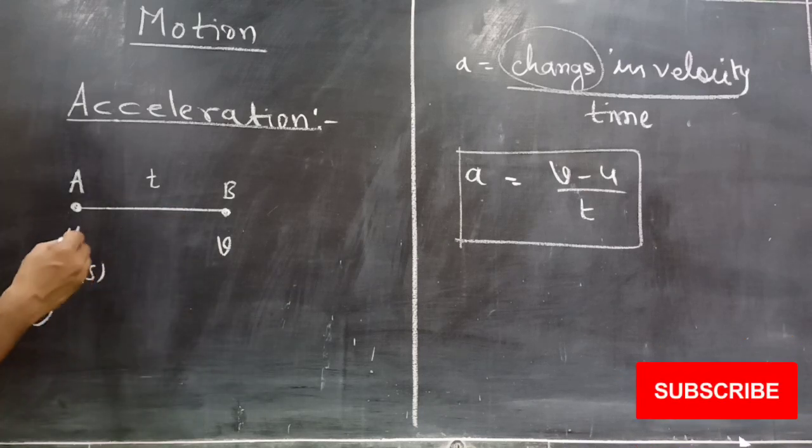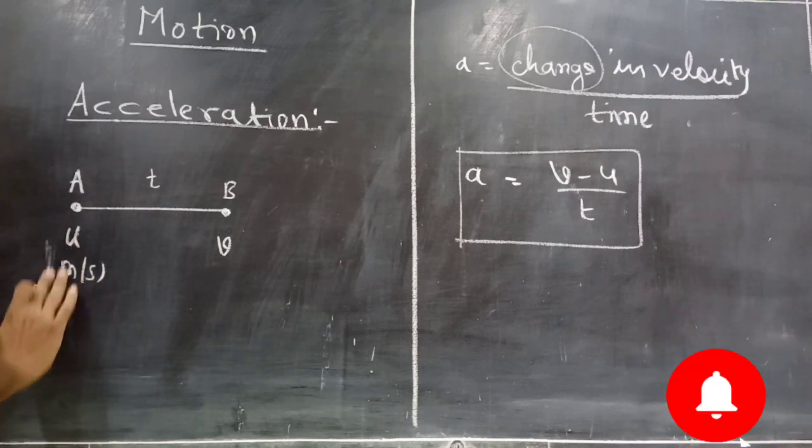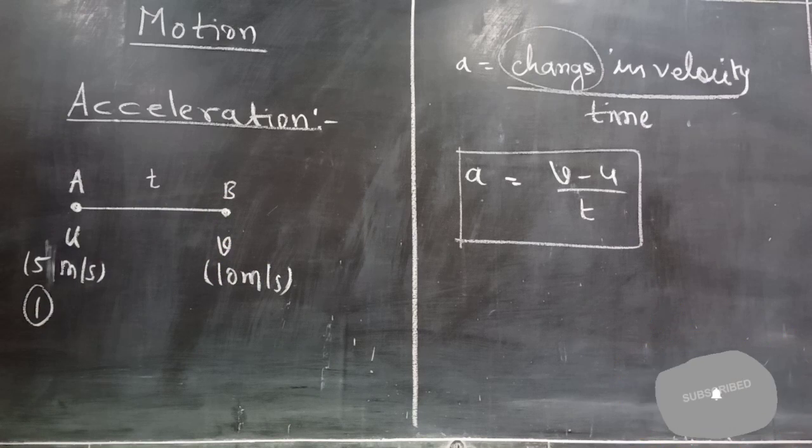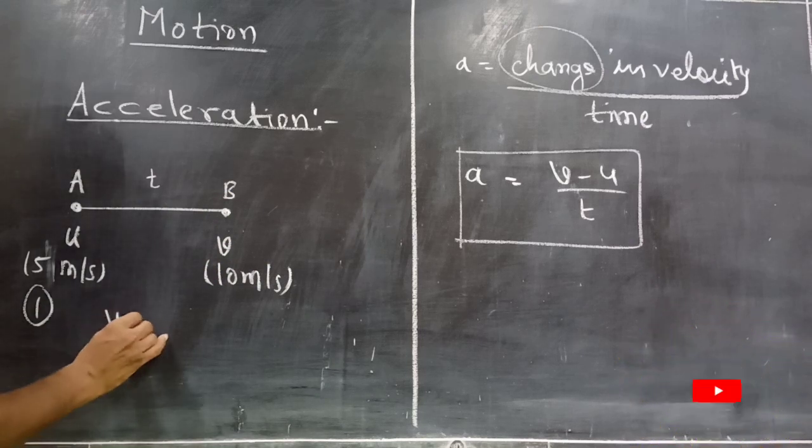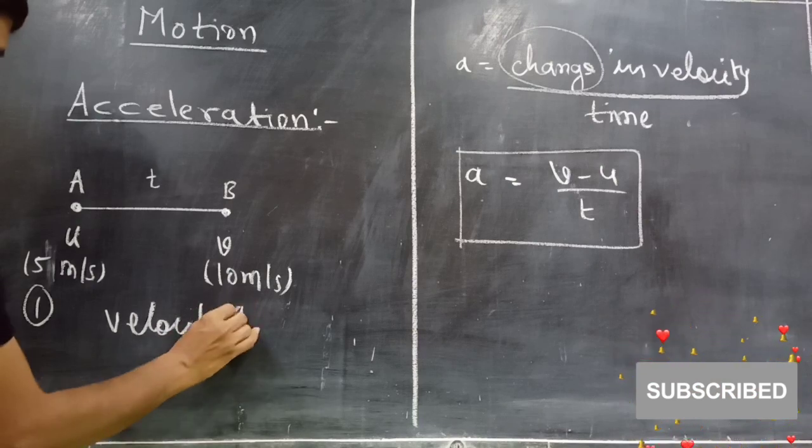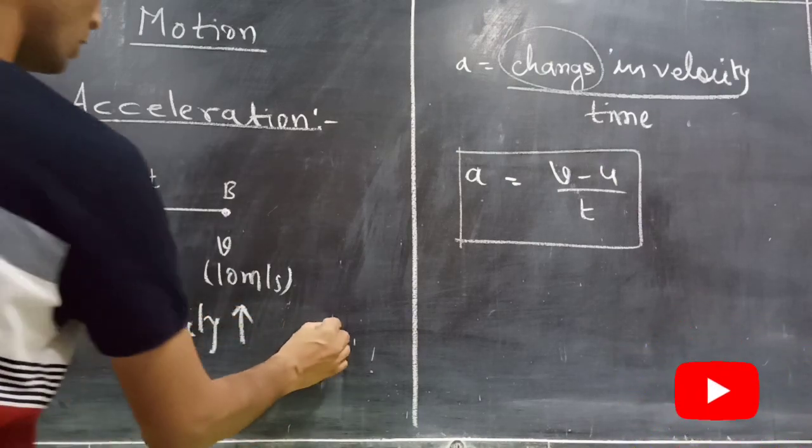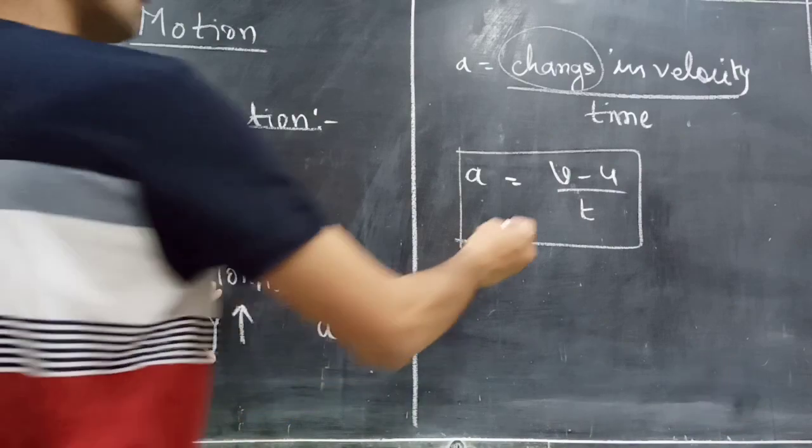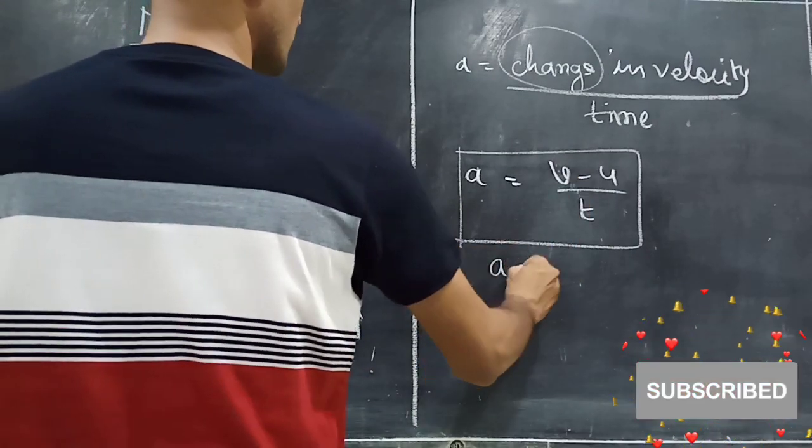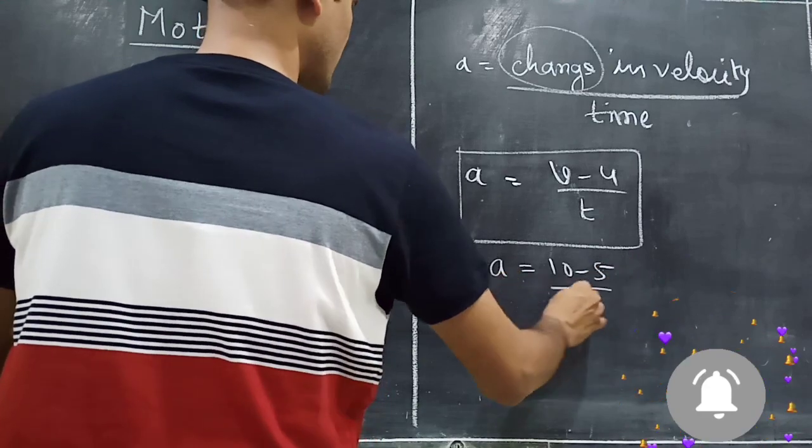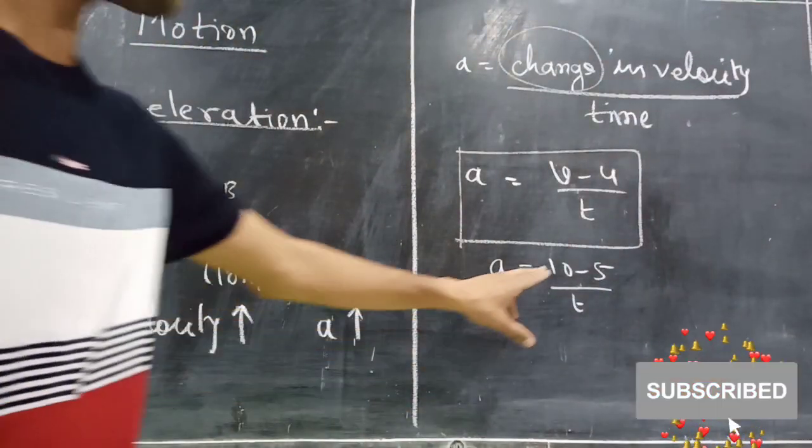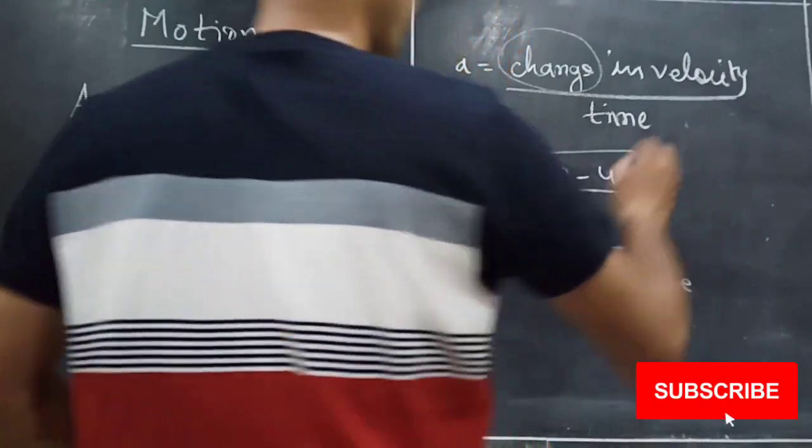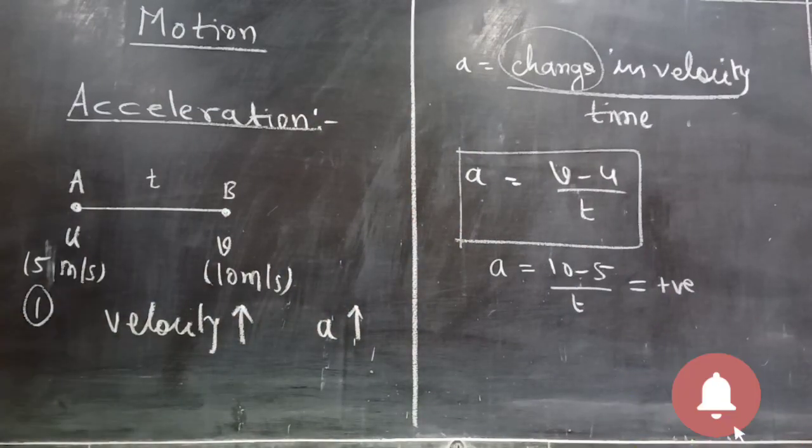Suppose velocity is increasing. Suppose particle was initially moving with velocity 5 meter per second. It reached 10 meter per second. Here you can see that velocity is increasing. When velocity increases, acceleration also increases and should be positive. Mathematically see. When you put values here, what will happen? A should be equal to 10 minus 5, divided by whatever time you have. Here, time is always positive. But here you see the difference. Here you get positive number, whatever time may be.